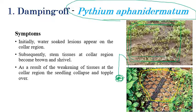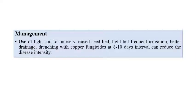Due to the weakening of tissues, the plant cannot supply an adequate amount of nutrients and minerals to the entire crop, so it can die in later stages of crop growth. After infection, brown color lesions can also be seen on the collar region. For management, use light soil for nursery along with raised seed beds, ensure good drainage, and soil drenching with copper oxychloride at 8 to 10 day intervals can reduce disease incidence and severity.